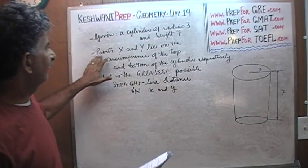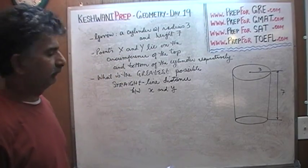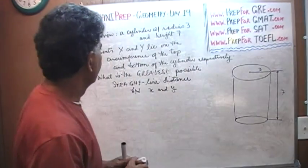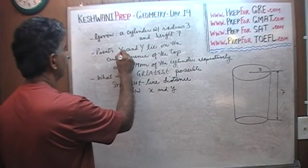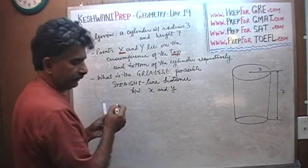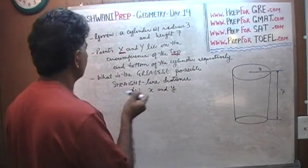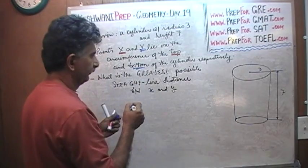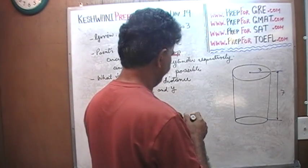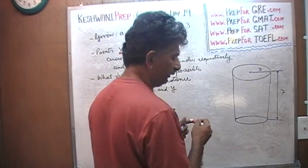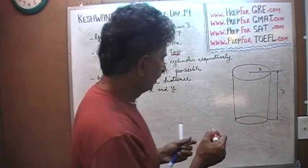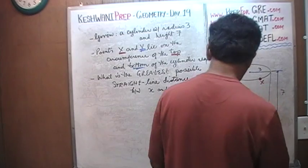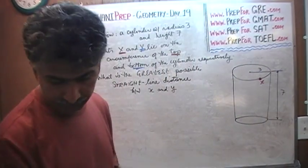Point X and Y lie on the circumference of the top and the bottom of the cylinder respectively. The word 'respectively' tells you that X lies on the top and Y lies on the bottom somewhere on the circumference. Let's draw our X and Y somewhere on the top. Let's put the X here, and Y lies on the bottom. Let's put Y somewhere here.